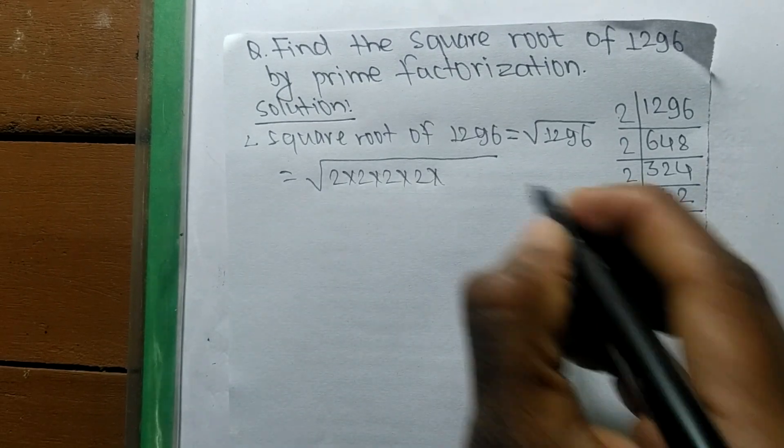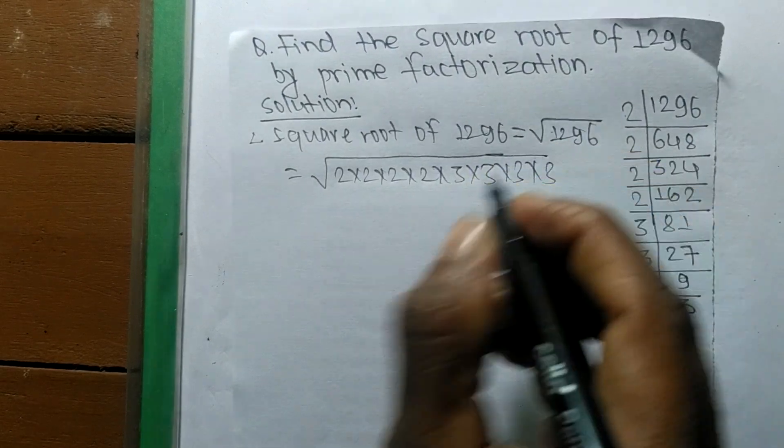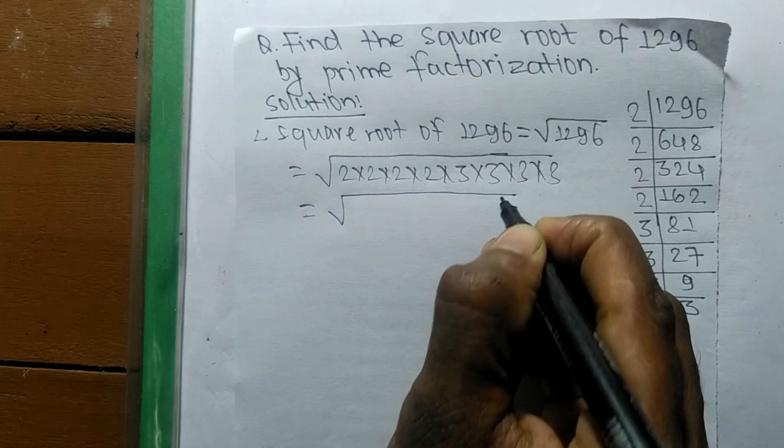Like 4 times 3 also, so 1, 2, 3, 4 times 3. After writing all the prime factors, now we make the square root of these prime factors.